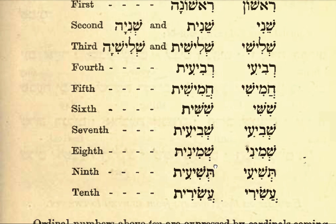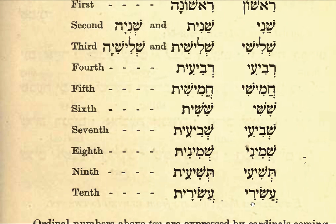Eighth: feminine Shminit, masculine Shmini. Ninth: feminine Tshi'it, masculine Tshi'i. Tenth: feminine Asirit, masculine Asiri.